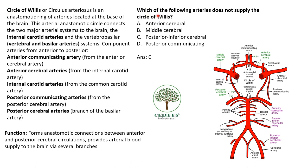Which artery does not supply the circle of Willis? The circle of Willis is the anastomotic ring of arteries at the base of the brain. It consists of the anterior communicating artery, the anterior cerebral arteries, the internal carotid, the middle cerebral artery, the posterior cerebral artery, and the posterior communicating artery. The posterior inferior cerebellar artery (PICA) is a branch of the vertebral artery and lies outside this ring — so PICA is not part of the circle of Willis.